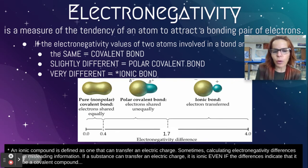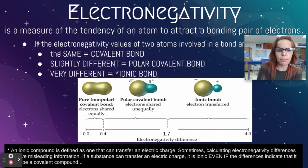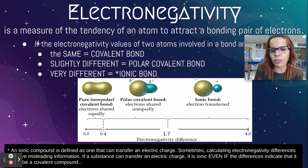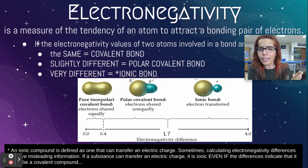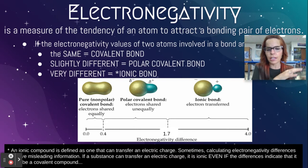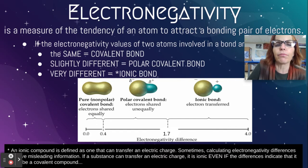It says an ionic compound is defined as one that can transfer an electric charge. This is an exception to the rule. Sometimes calculating electronegativity differences can give misleading information. If a substance can transfer an electric charge, it is ionic, even if the differences indicate that it should be a covalent compound. This does not trump the reality of being able to transfer an electric charge. If it can transfer an electric charge, then it's ionic — don't worry about the electronegativities.